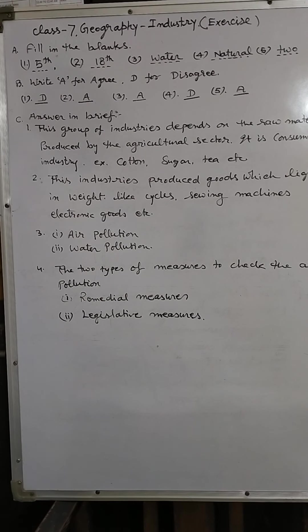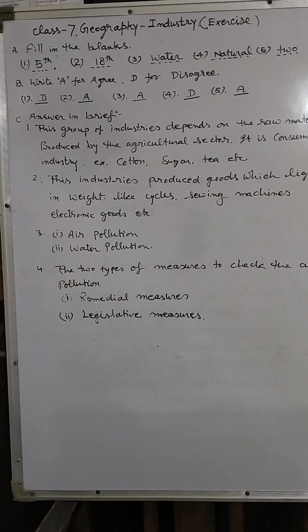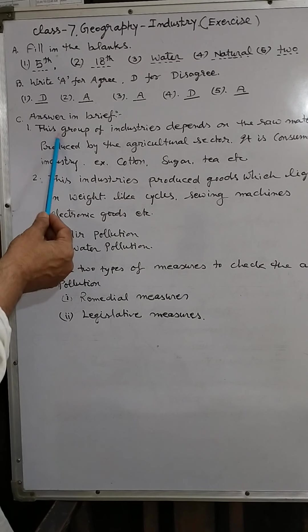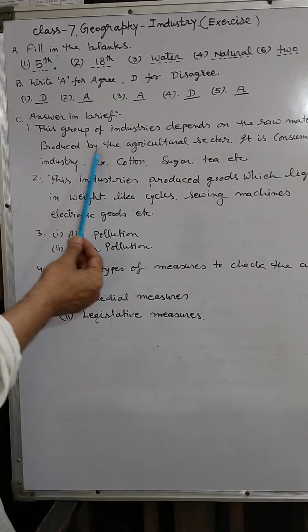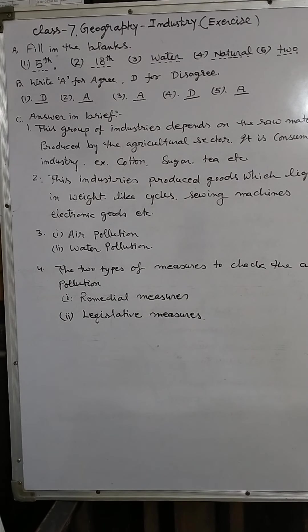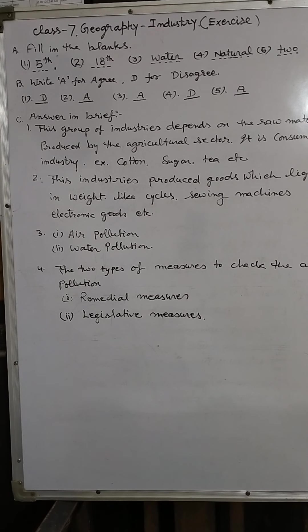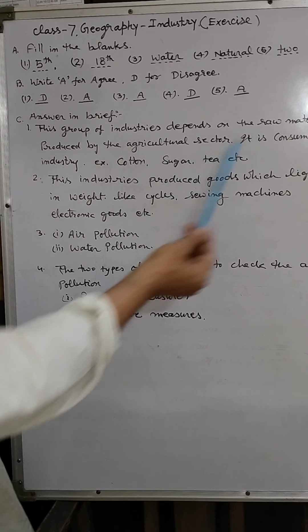Now answer in brief. You see, first answer: What are called agro-based industries? The group of industries, the group of industries depends on raw material produced by the agricultural sector. Some industries fully depend on agriculture like cotton, sugar, juice, tea, coffee, etc. So they are called agro-based industries.